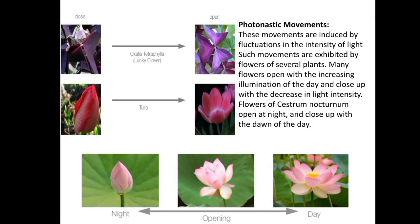Photonastic movement is the non-directional movement of a plant part — usually the petals of a flower — in response to light. Many petals open in daylight and close in the evening in response to light intensity. Examples of photonastic movement include dandelion flowers, moon flowers, and leaves of Oxalis, which take up a horizontal position in sunlight and drop down during the night.